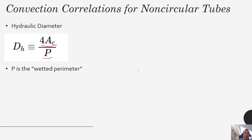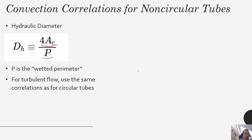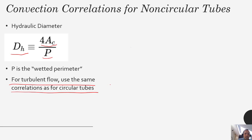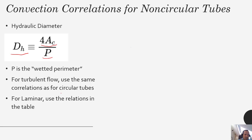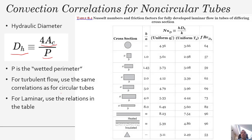That wetted perimeter is used in the calculation of the hydraulic diameter. For turbulent flow, it's straightforward: calculate the hydraulic diameter, use it in the Reynolds number calculation, and plug that Reynolds number into the same turbulent flow correlations used for circular tubes. For laminar flow, we use different relationships. Our textbook has Table 8.1, which gives Nusselt numbers for fully developed laminar flow in tubes of differing cross-sections.